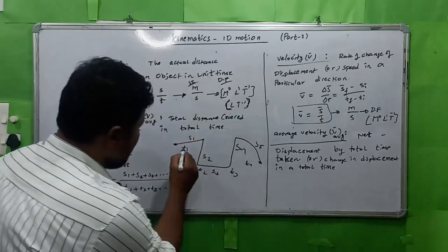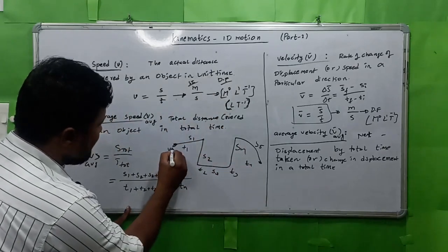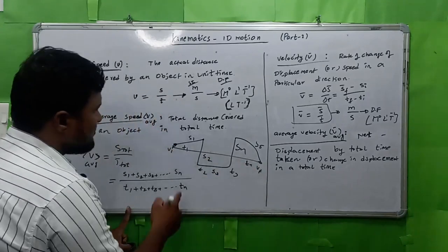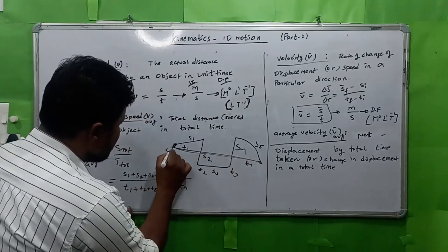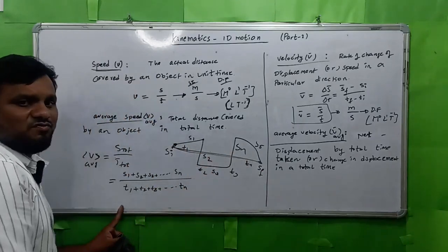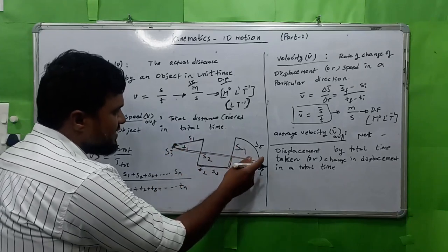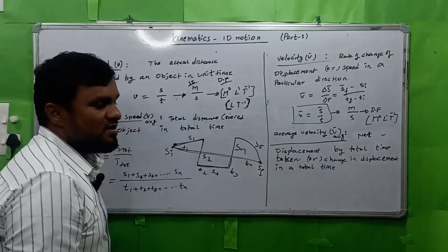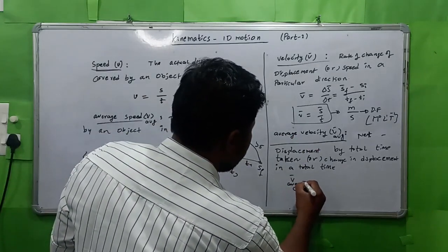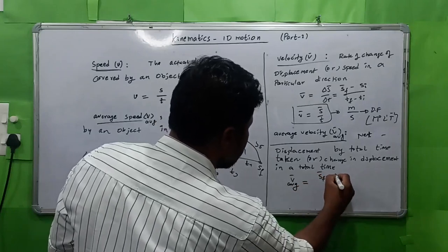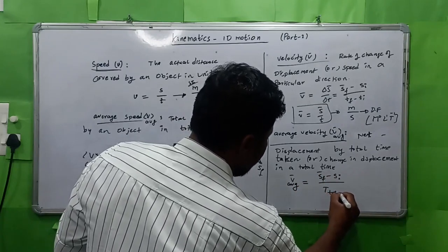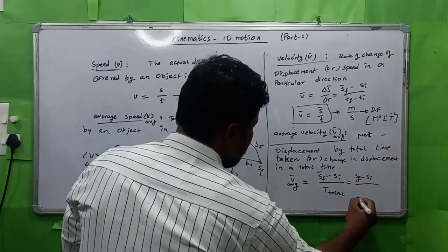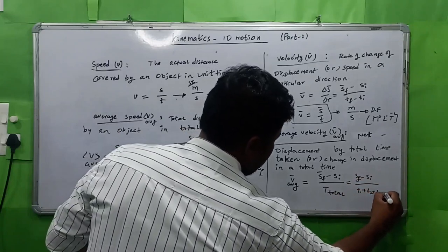For average velocity, observe the initial displacement and final displacement. If you draw a straight path, you get the net displacement. The time interval remains the same — even for the actual path. So average velocity = net displacement, that is S_final minus S_initial, divided by total time T1 + T2 + T3 + ... + Tn.